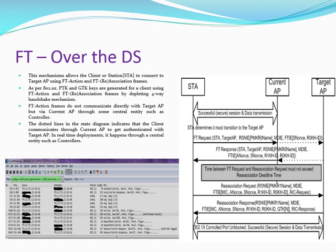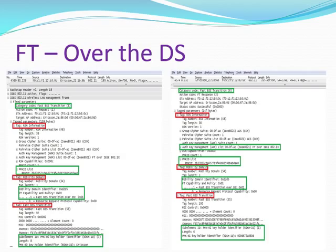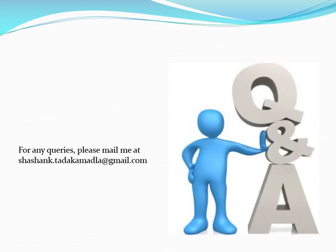No EAP or four-way handshake is necessary to unlock the 802.1X control port. FT action frames in the over-the-DS method are communicated with the target AP through the current AP and the central entity, whereas FT reassociation frames are communicated directly with the target AP. I have captured the frames during client roaming using over-the-DS. FT action frames contain RSN IE, Mobility Domain IE, and Fast Transition IE, and FT reassociation frames are similar to those shown in the over-the-air method.